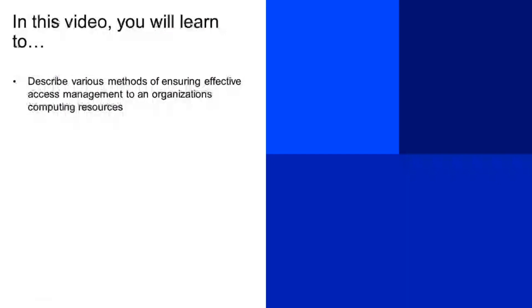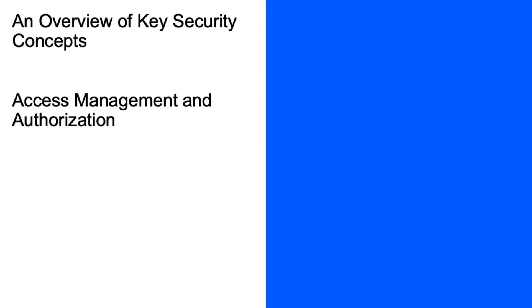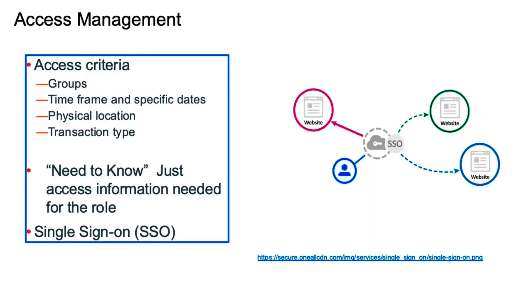In this video, you will learn to describe various methods of ensuring effective access management to an organization's computing resources. Authorization is the process of allowing somebody to access a specific object. There are different types of criteria. You could restrict access by groups, by timeframes or specific dates, and by physical location or transaction type. For example, you could allow subjects to access files based on specific groups — an industry group may have access to more data than a financial group.